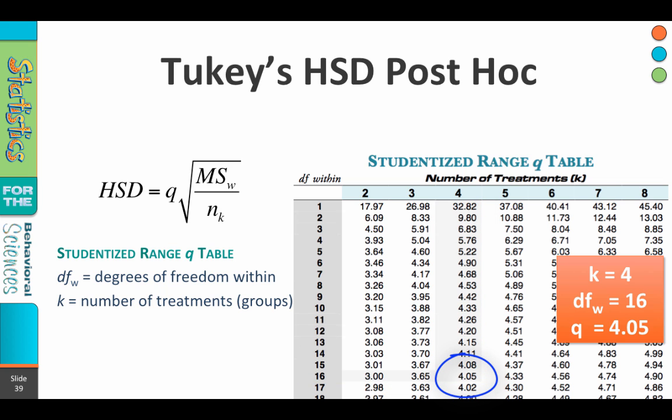The studentized ranged Q table is also at the back of your notes — you can find it waiting for you there. So we now have our Q value: that's 4.05.